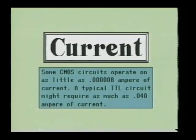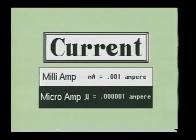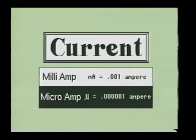When working with electronic circuits, the current flow is usually very small. So there is a kind of shorthand used to represent these smaller values of current. We have the milliamp and the microamp. The term milliamp is printed with a small letter M followed by the letter A. One milliamp is equal to one one-thousandth of an amp of current. The microamp is usually represented by the Greek letter mu. One microamp is equal to one millionth of an amp of current. You will see these two terms used a lot in schematic diagrams.